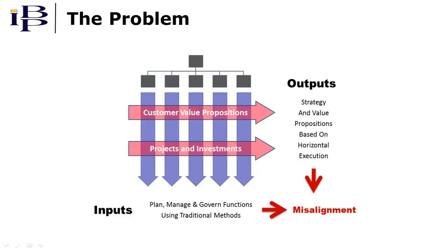The problem facing complex manufacturers is that their strategies and value propositions are typically based on superior horizontal execution. But they plan, manage, and govern their business along functional lines. What often results are unclear accountabilities and decision rights for delivering planned business results.